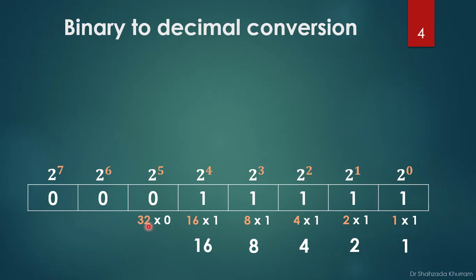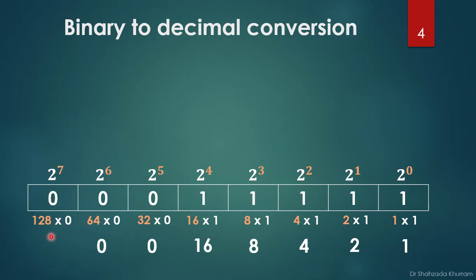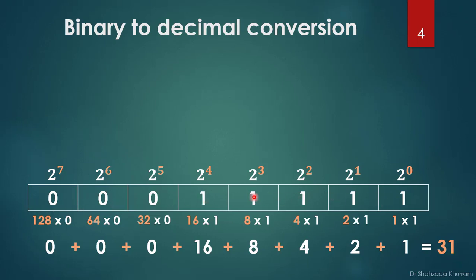2 raised to power 5 is 32, multiplied by 0, equals 0. 2 raised to power 6 is 64, multiplied by 0, equals 0. 2 raised to power 7 is 128, multiplied by 0, equals 0. We then sum all these numbers and the answer is 31. So this octet or byte represents the value 31.